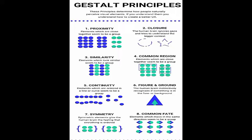Next we have the law of similarity. Elements which look similar seem to form a group. If you look at the diagram, you can easily see that the circular group is on one side and another polygon-shaped structure is on another side — they form a group.